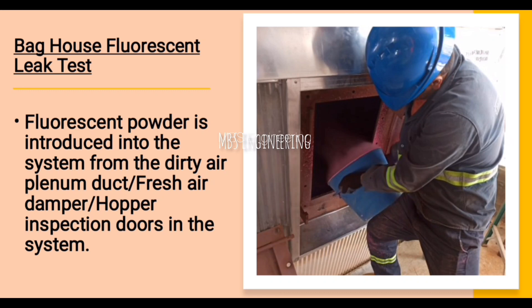Please see the photos for better understanding. Fluorescent powder is introduced into the system from the dirty air plenum duct, fresh air damper, or hopper inspection doors in the system. Once the fan has reached 75% of its design volume rate, the fluorescent powder is injected.